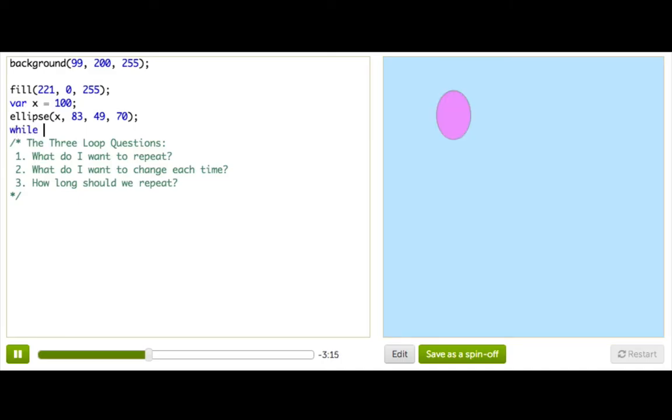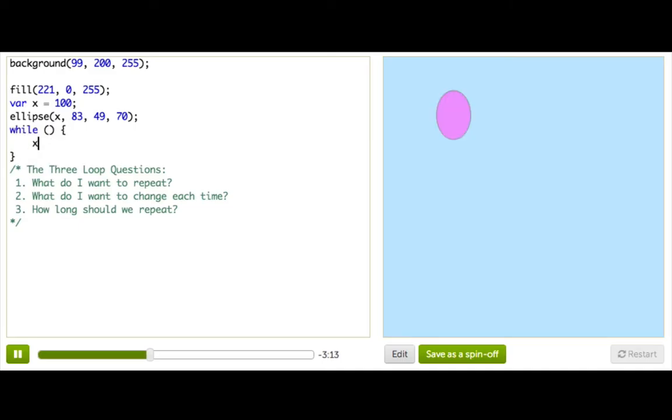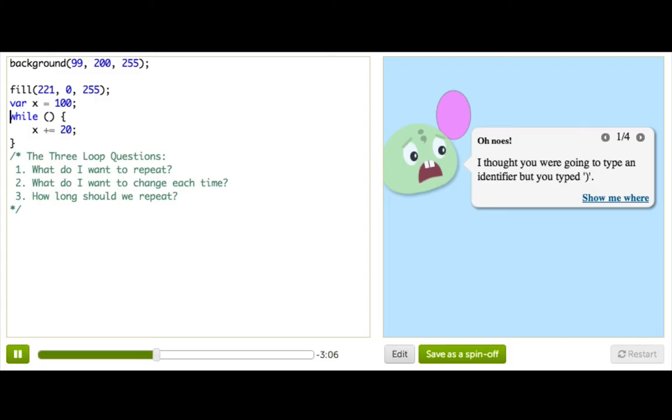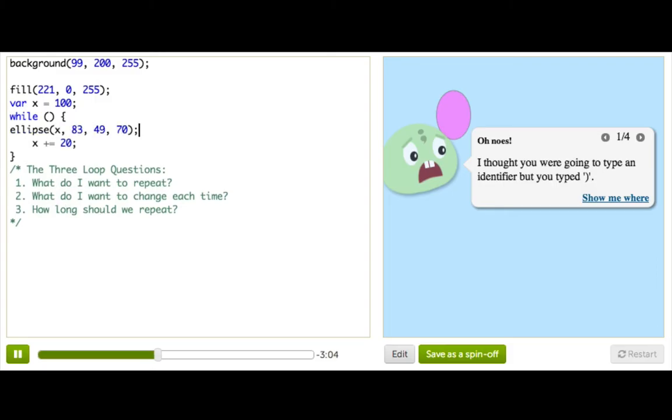And now, we're going to be changing that variable inside of our loop. So, we'll use a while loop, and then inside that loop, we'll say that x is going to change each time, maybe by 20. If we just move that ellipse inside, being very careful, of course, not to move that variable declaration inside, because then just think about what would go wrong. That's actually worth trying on your own, if you're curious.